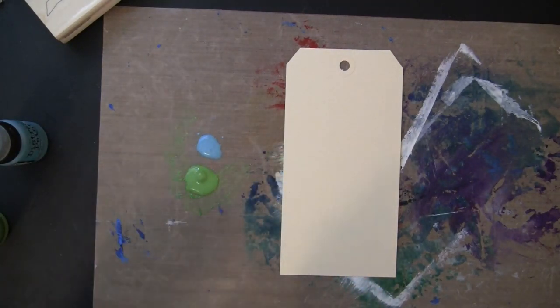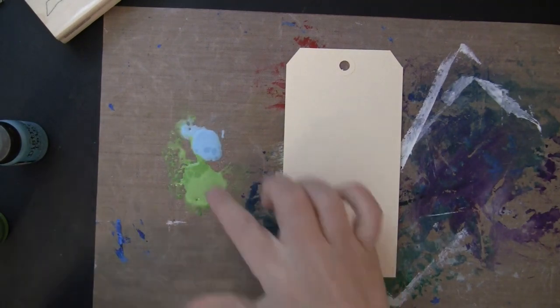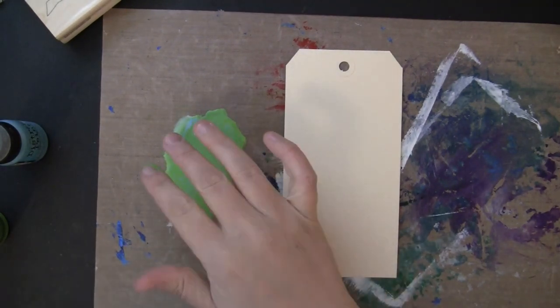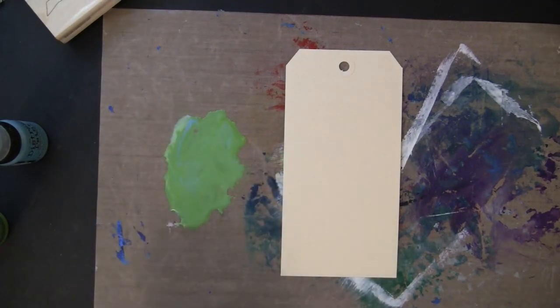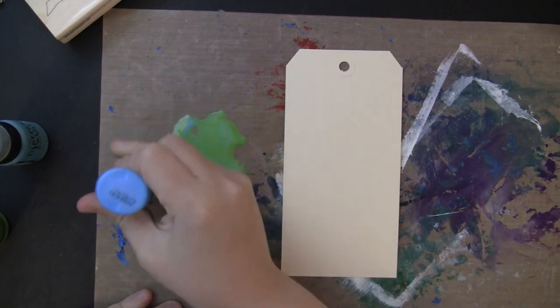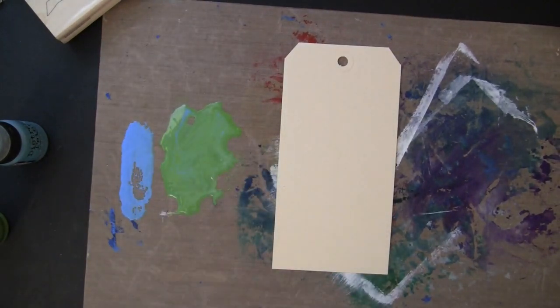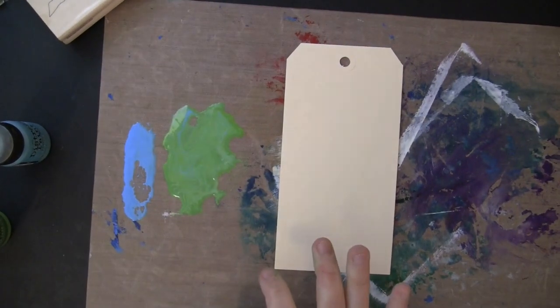I'm going to mix up those colors to just kind of see what I can get and have some variation. It was a little bit more green than I wanted, so I'm going to add some other colors. So this one is Salty Ocean, and I'm also going to put some Chipped Sapphire down.